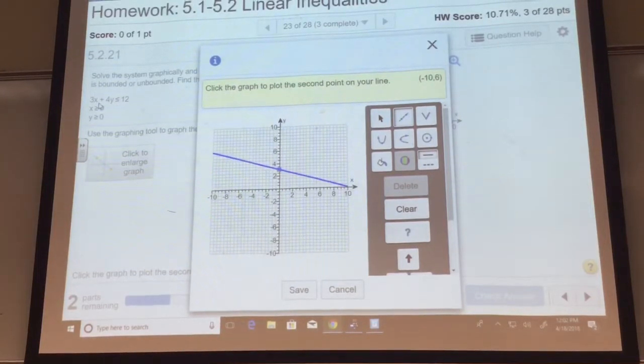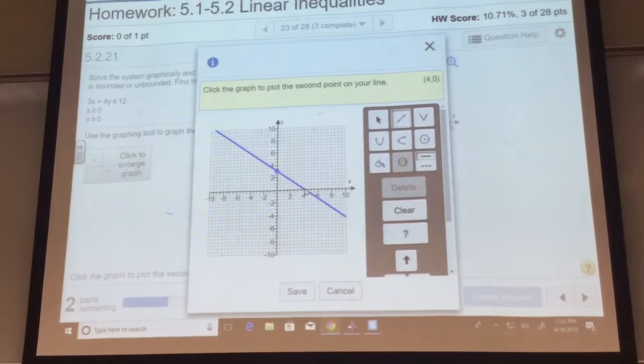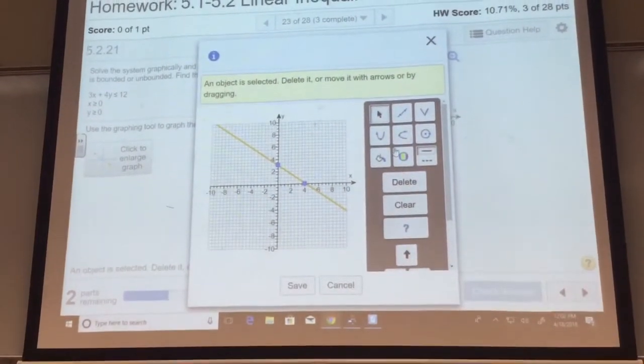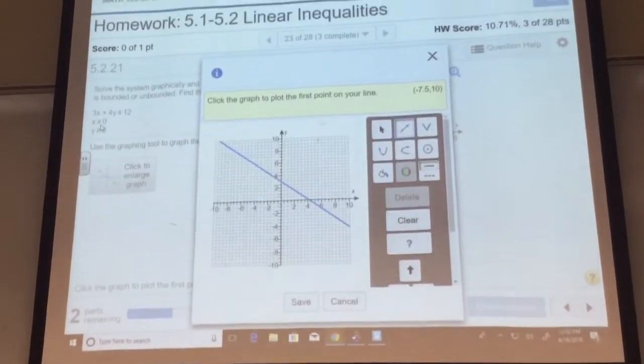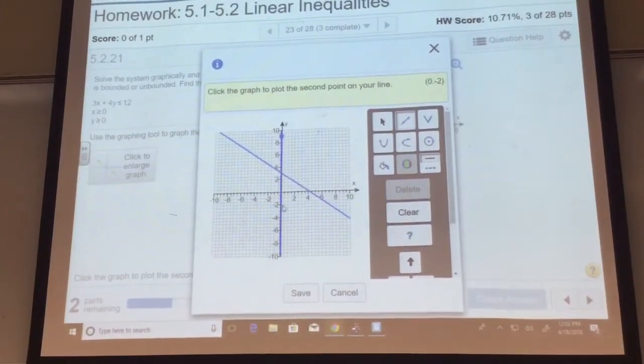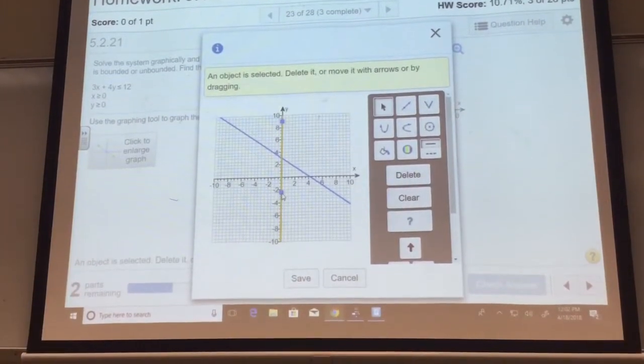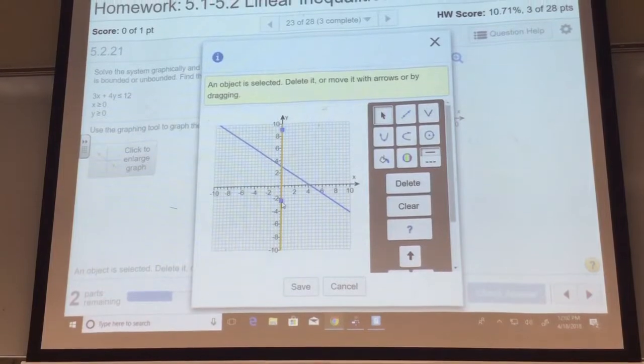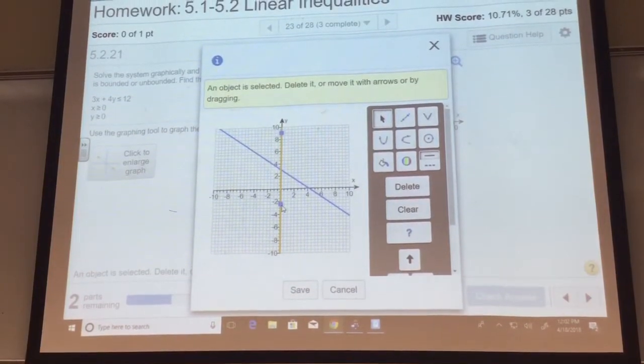If y is equal to 0, then x has to be 4. Now, x being greater than or equal to 0 means that you need to lock it off so it can't go to the left of the y-axis, because all the x values have to be positive.